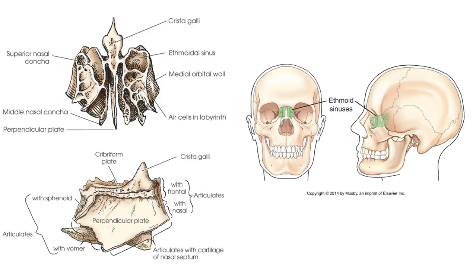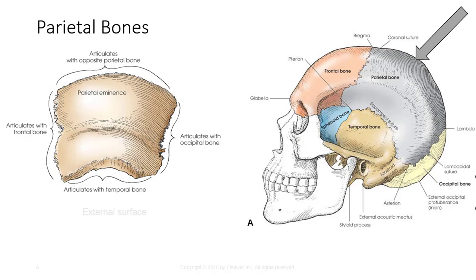The ethmoid articulates with the frontal, sphenoidal, lacrimal, maxilla, and vomer bones.